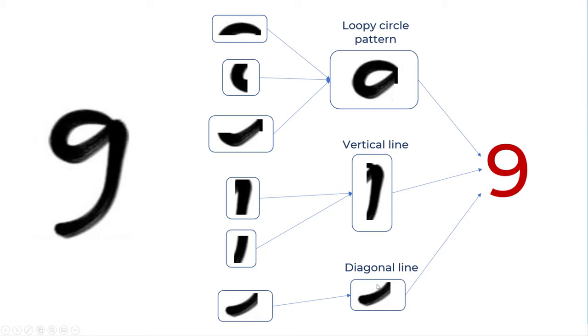Sometimes you don't have a diagonal line at all. But we know that whenever there is a loopy circle pattern at the top, vertical line in the middle, diagonal line in the end, that means digit 9.